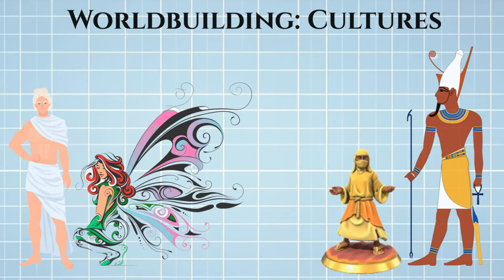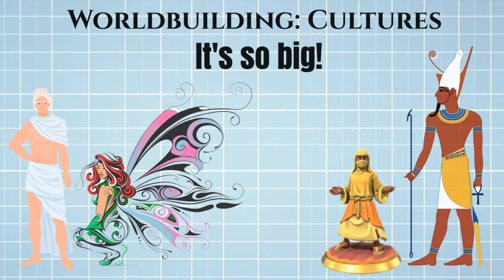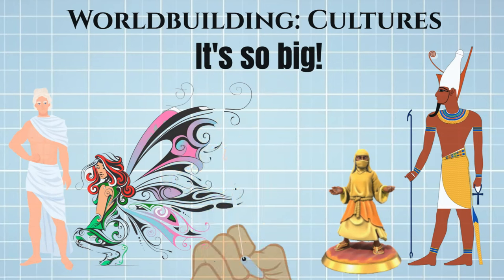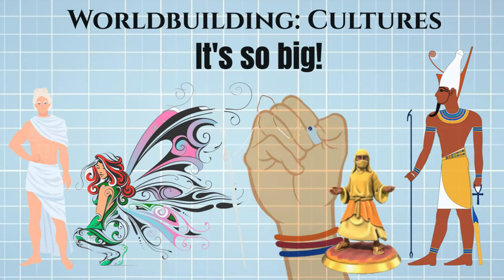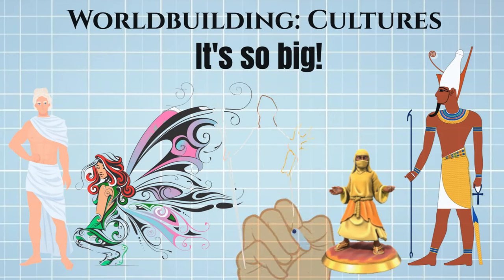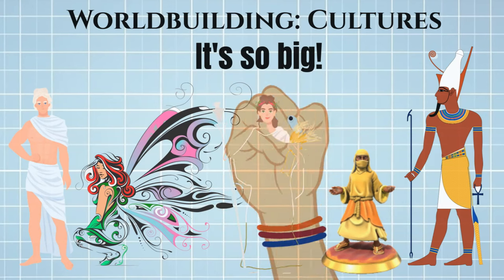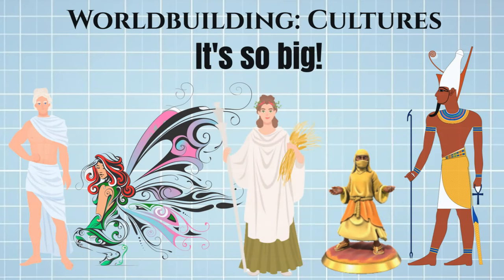That is certainly a mouthful. But on this podcast, we focus on worldbuilding what we need, when we need it. So how do we build a culture or multiple cultures without drowning in the details? We take the same approach as in other episodes: we break the process of cultural creation down into components, and then we fill in what we can, moving between sections as we need to. Culture just has more sections than our previous elements, and that is the process today's episode kicks off.